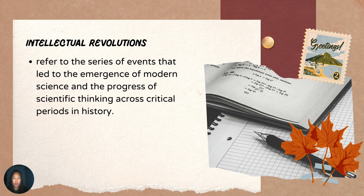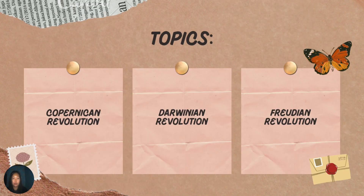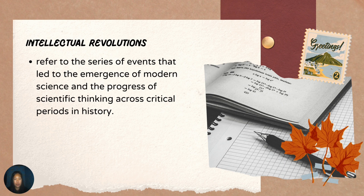So what is a pre-Socratic? The pre-Socratics were 6th and 5th century BCE big thinkers who introduced a new way of inquiring into the world and the place of human beings in it. They were recognized in antiquity as the first philosophers and scientists of the Western tradition. In science and technology, intellectual revolutions refer to the series of events that led to the emergence of modern science and the progress of scientific thinking across critical periods in history. Although there are many intellectual revolutions, we will just focus on three of the most important ones that altered the way humans view science and its impacts on society.